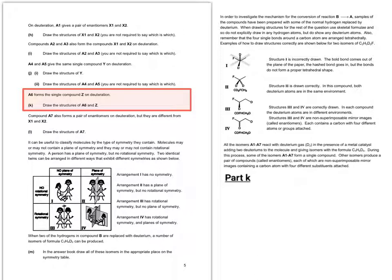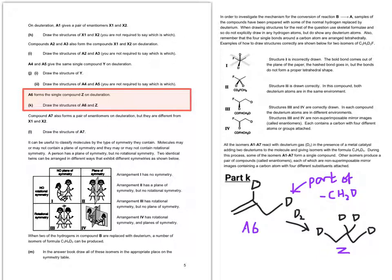So then A6 forms the single compound Z on deuteration. It says draw the structures of A6 and of Z. So the only way that that could work is for the deuterium atom, the second deuterium atom rather, in addition to the one on the CH3, to be placed on the same carbon that the CH3 is coming off. Or should I say the CH2D group is coming off. I've just made my point there a little clumsily, so I've illustrated it a bit there.